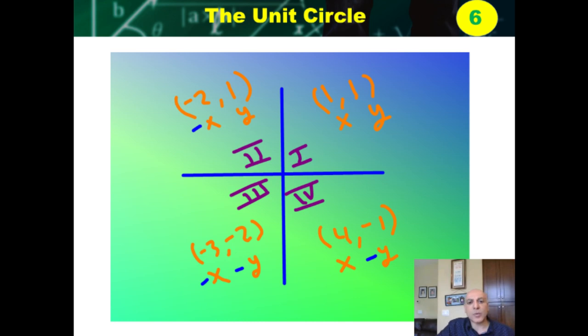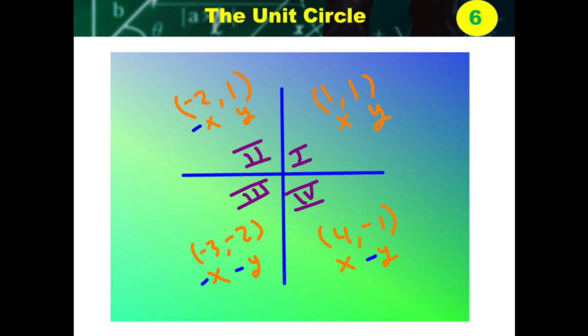Somebody picked another point — let's say negative 2, 1 in the second quadrant, where X is negative and Y is positive. Down here in the third quadrant, let's say negative 3, negative 2 — negative X, negative Y. And in the fourth quadrant, 4, negative 1 — positive X, negative Y.